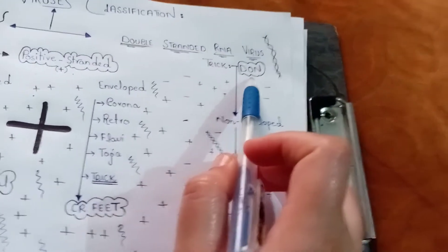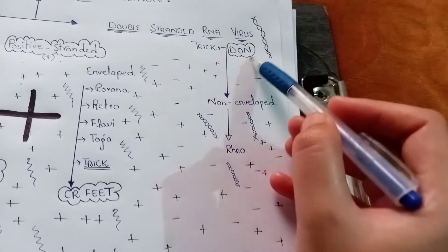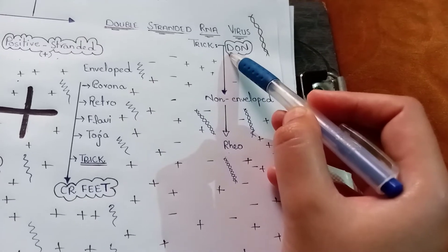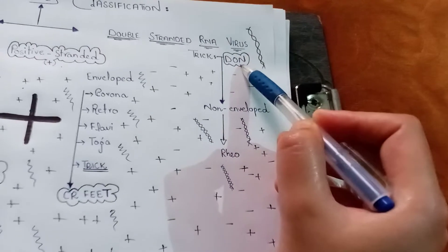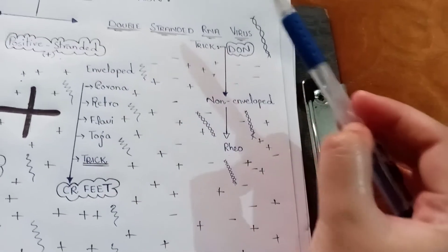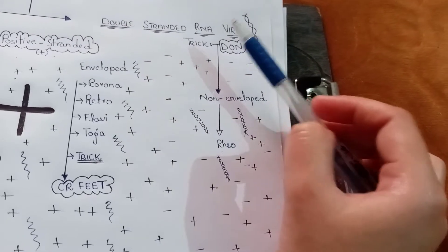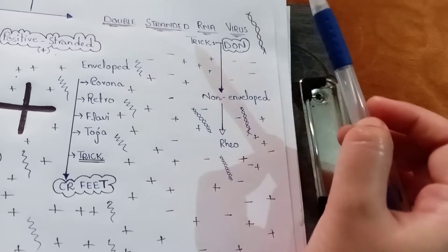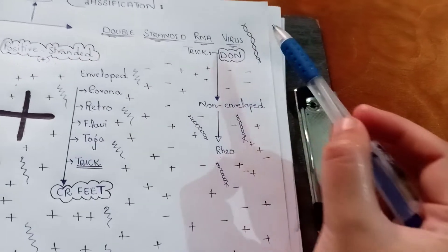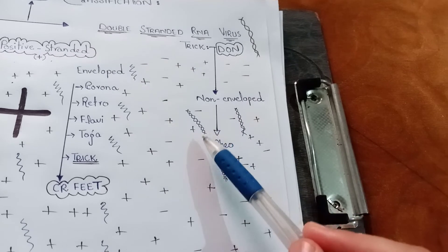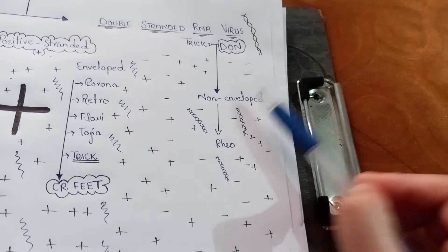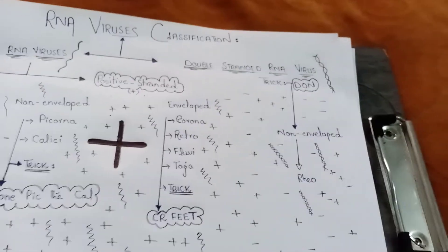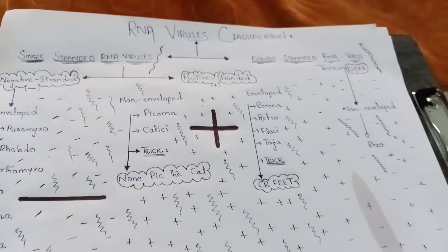The last category is the double stranded RNA virus. The trick is 'DN': D denotes double stranded and N denotes non-enveloped. As you can see, there are no enveloped double stranded RNA viruses. The only double stranded RNA virus is Reo, and it is non-enveloped.